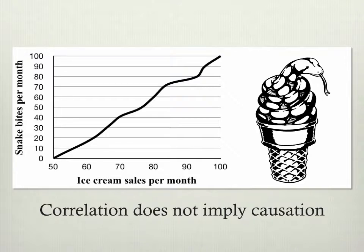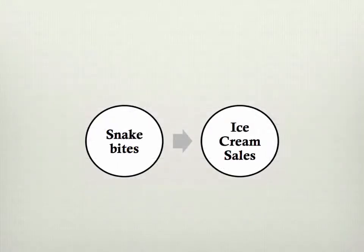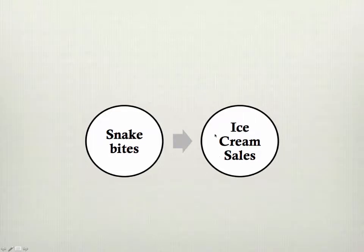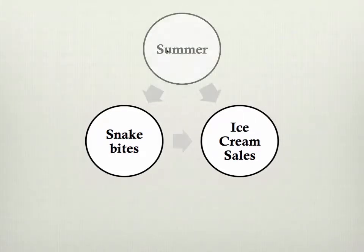You have to do additional work to find out. Let's look at this in a little bit of a different way. What we're asking here is: do snake bites cause ice cream sales? And we imply causation by using an arrow. What's another possibility? Well, snake bites could cause ice cream sales, or ice cream sales could cause snake bites. Or really, more likely than any of these ridiculous examples, there's a third variable involved — and that's just the time of year, the summer.